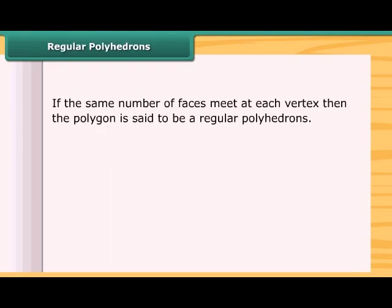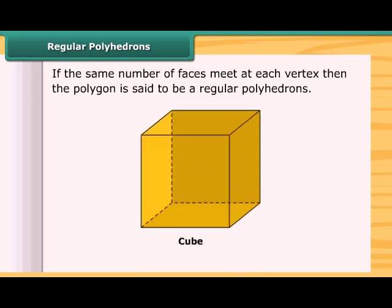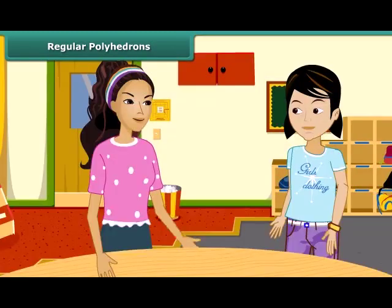If the same number of faces meet at each vertex, then the polygon is said to be a regular polyhedron. A cube is a regular polygon because here three faces meet at each vertex.